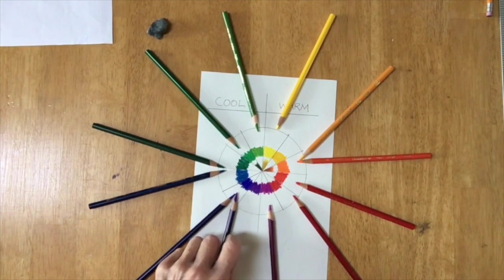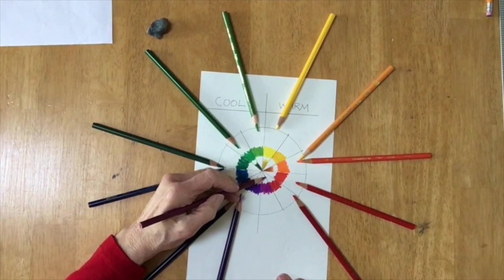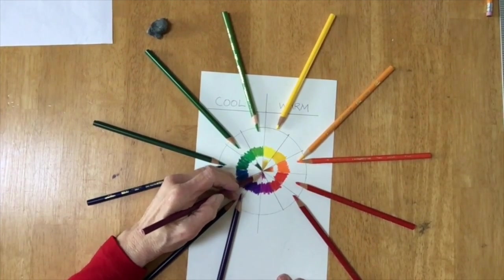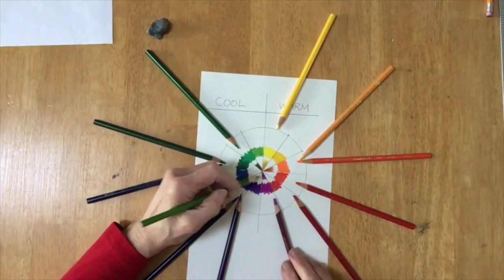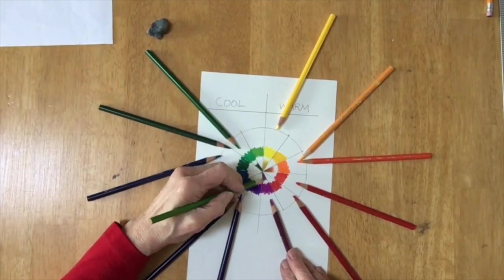This is a really good way to understand how to create realism in a drawing. So when you're drawing, let's say, a red apple, in order to get some of the shadow areas of the red apple, you will be using green.